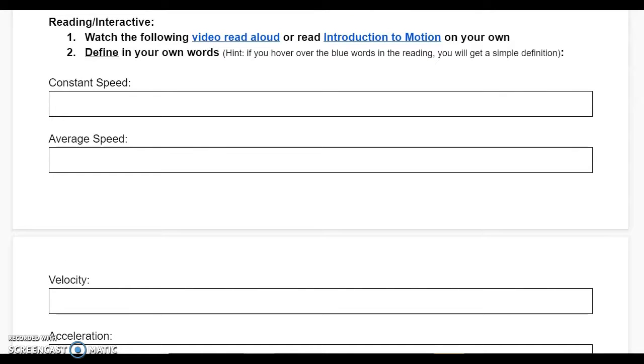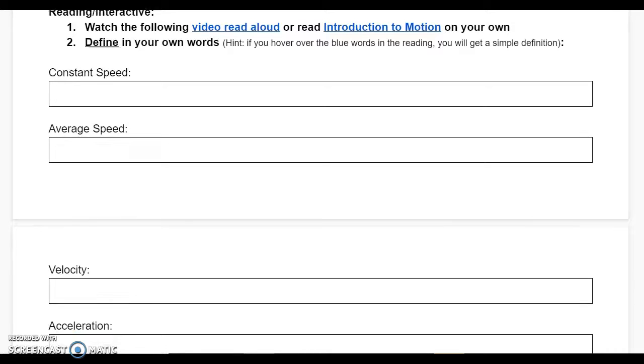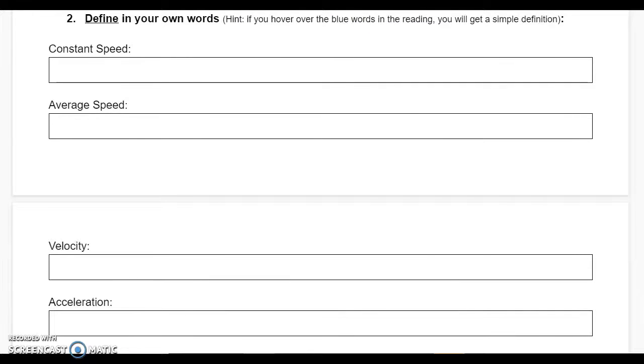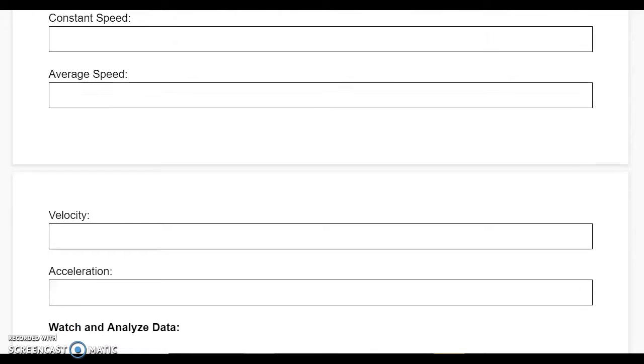You'll notice in the Introduction to Motion reading, there are words highlighted in blue. If you hover over those words, it will give you a simple definition that you can use to help you come up with your own definition for each of them.